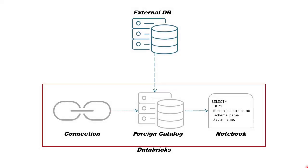To enable read-only querying of external datasets using LakeHouse Federation, you need to create two things: a connection and a foreign catalog. A connection is a securable object within Unity Catalog that specifies the server details and credentials for accessing an external database system. The foreign catalog acts as a metadata layer representing the structure of your external database within Databricks. It doesn't mirror or replicate the data itself — the data stays in the external system, and only the necessary data is transmitted when you run a query, ensuring efficient access without duplication.